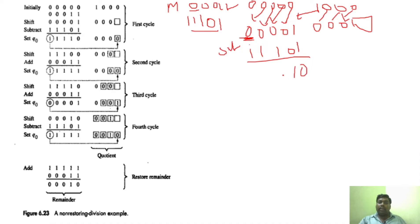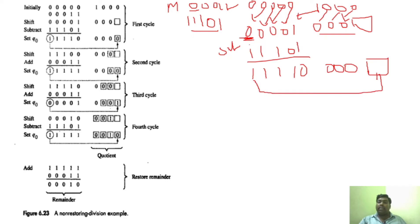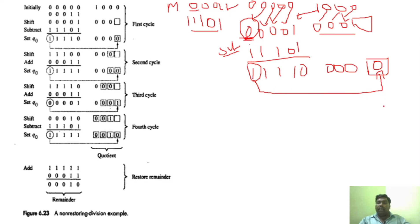After the subtraction, A becomes 11111 and the Q portion remains 000 with an empty slot. In non-restoring division, we do not restore — we carry this value forward to the next cycle. In restoring division you would restore here, but here you just keep the result. This completes cycle 1: shift and subtract. The Q-naught bit is set to 0 since the sign bit is 1.